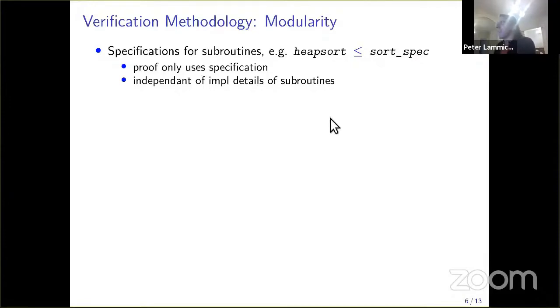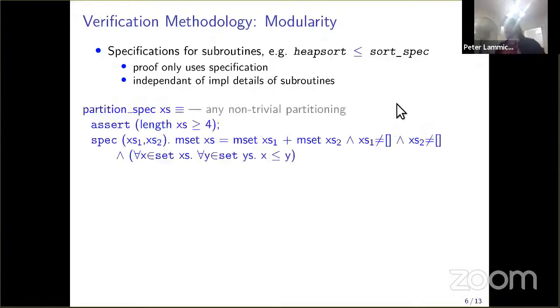The same principle also applies for the proofs. Here are some specifications we use. For example, partitioning. We allow any non-trivial partitioning. The set of elements is the same. The first partition is smaller than the second partition, and the partition is non-trivial, so none of the two partitions is empty.